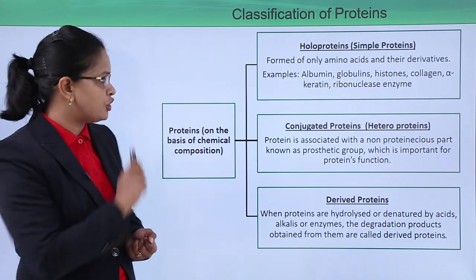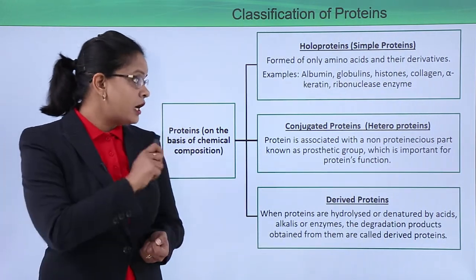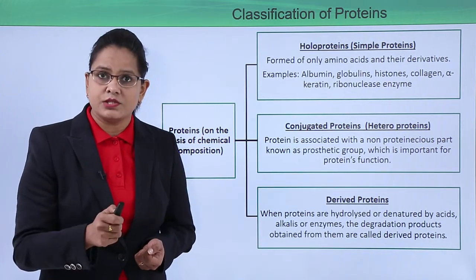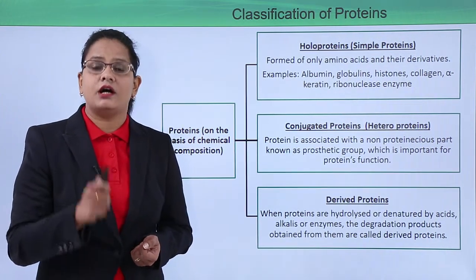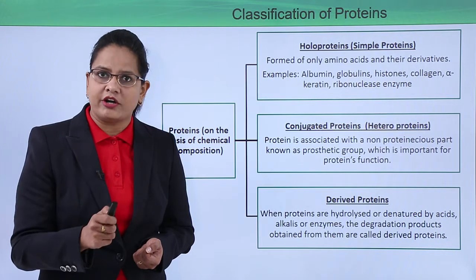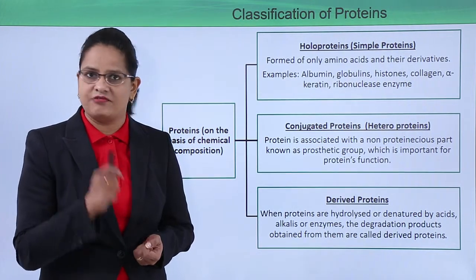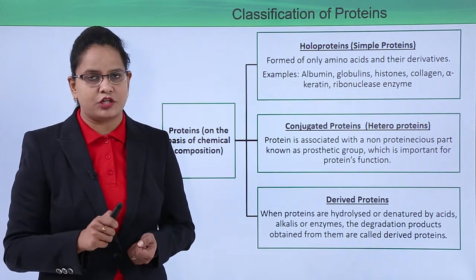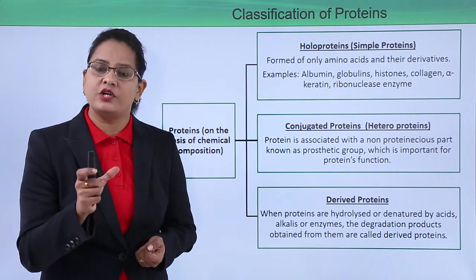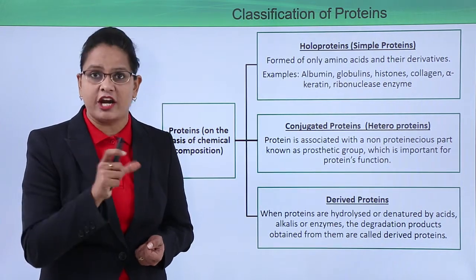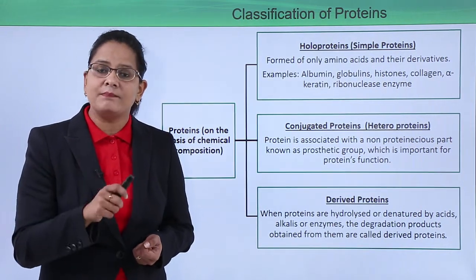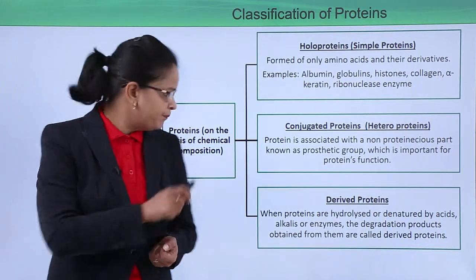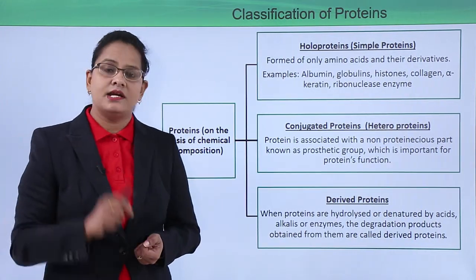Conjugated proteins are those proteins that are associated with an inorganic or organic prosthetic group — we have discussed the prosthetic group in the context of quaternary structure as well. So conjugated means joined with something else. Examples will be discussed in detail in the next video.